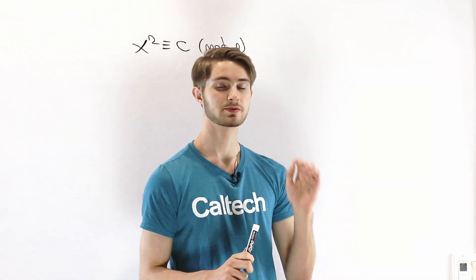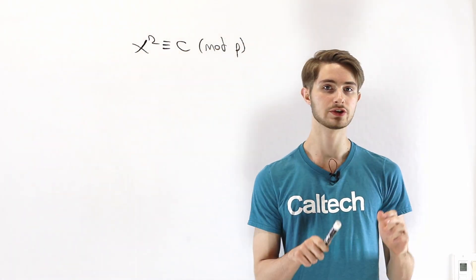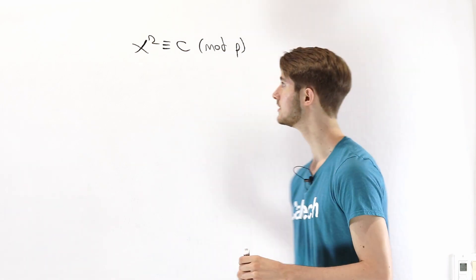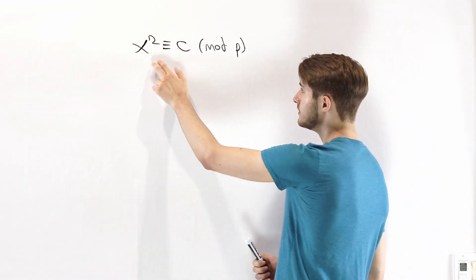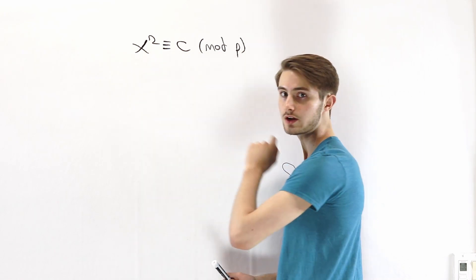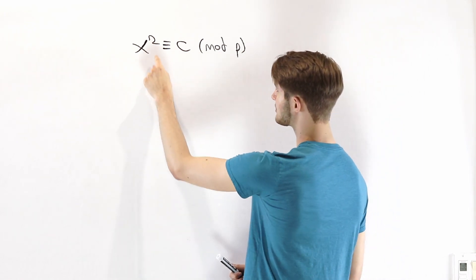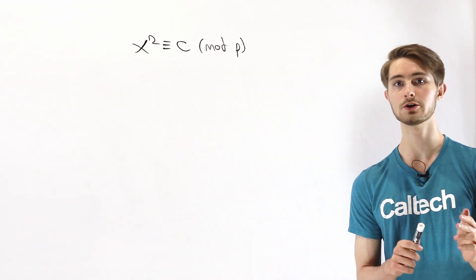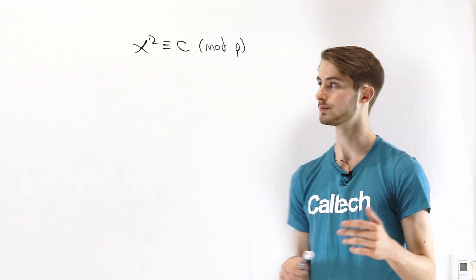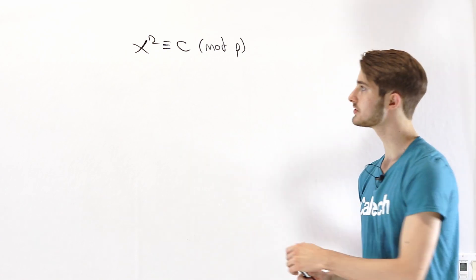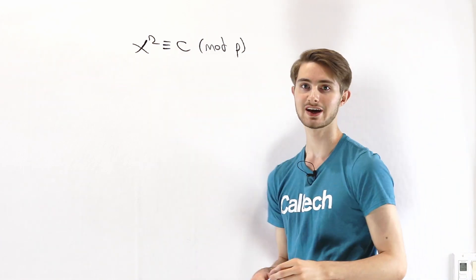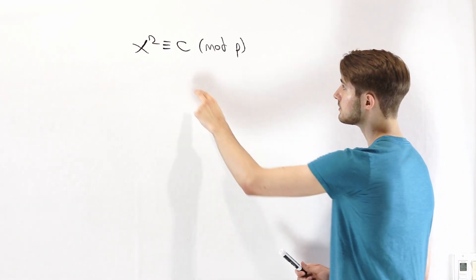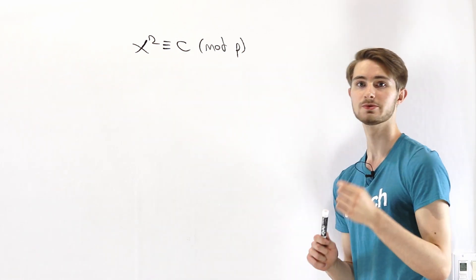We are going to talk about some of the properties of quadratic residues in terms of the indices relative to a particular primitive root. We're looking at the standard quadratic residue congruence, which says x squared is congruent to C mod p. If we want to determine whether C is a quadratic residue mod p, our goal is to find whether this congruence has a solution for x. To do that, we're going to reframe this congruence in terms of indices.